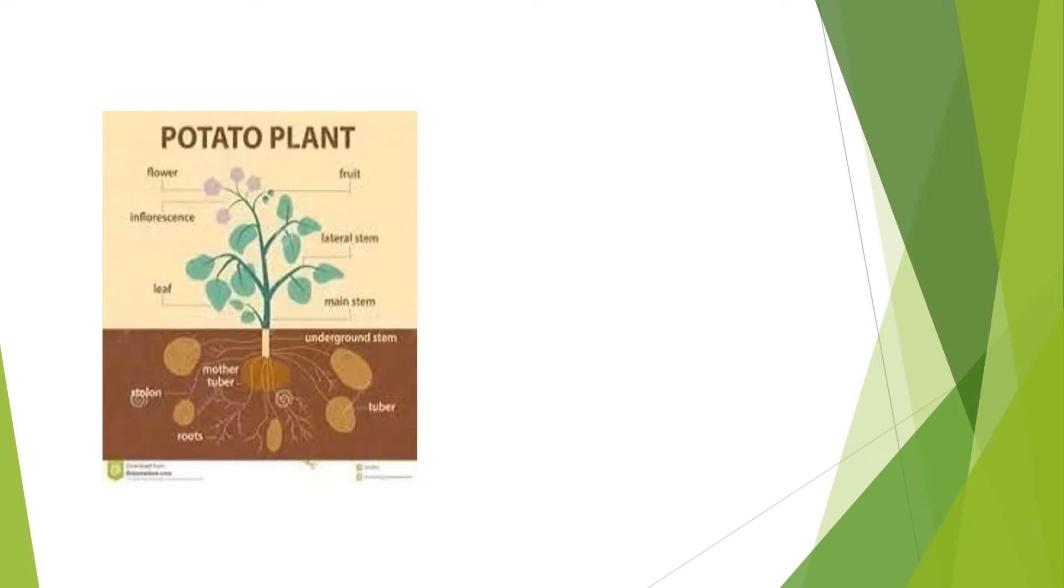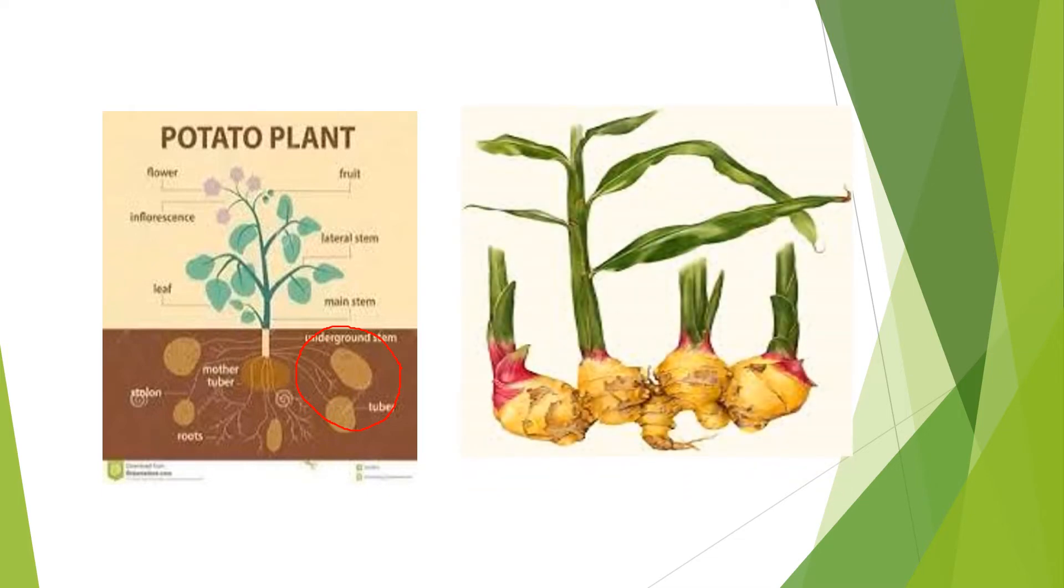Plant of potato and ginger. This is a potato plant. You can see the potato here. These are the underground stem. Now let us see the ginger plant. These are the ginger and these are the stems.